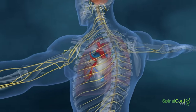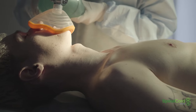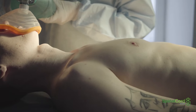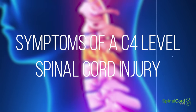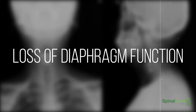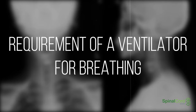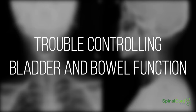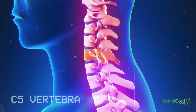C4 vertebrae: The portion of the spinal cord relating to the C4 vertebrae directly affects the diaphragm. Patients with C4 spinal cord injuries typically need 24-hour-a-day support to breathe and maintain oxygen levels. Symptoms of a C4 level spinal cord injury include loss of diaphragm function, potential requirement of a ventilator for breathing, limited range of motion, paralysis in arms, hands, torso and legs, and trouble controlling bladder and bowel function.